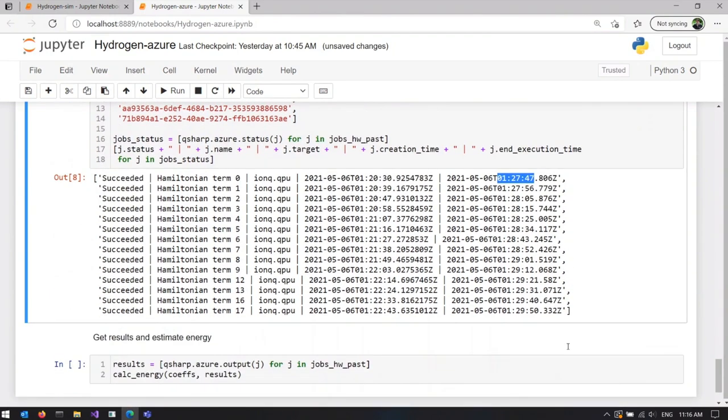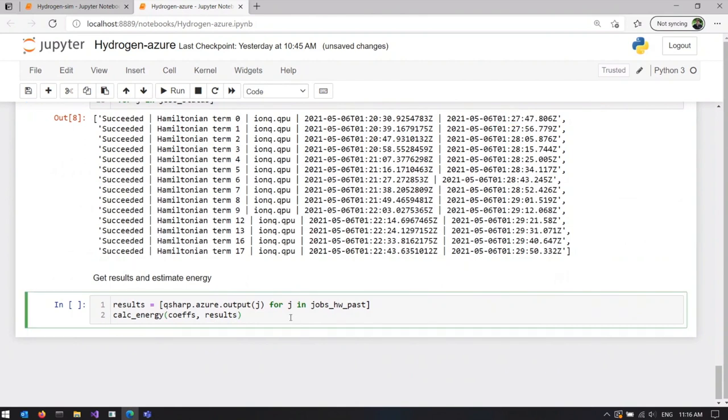And of course, all of those jobs succeeded. So now we can use the results of those jobs to aggregate them into the energy and to get our final number of this demo.